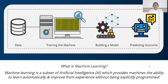What is machine learning? Machine learning is a subset of artificial intelligence which provides machines the ability to learn automatically and improve from experience without being explicitly programmed.